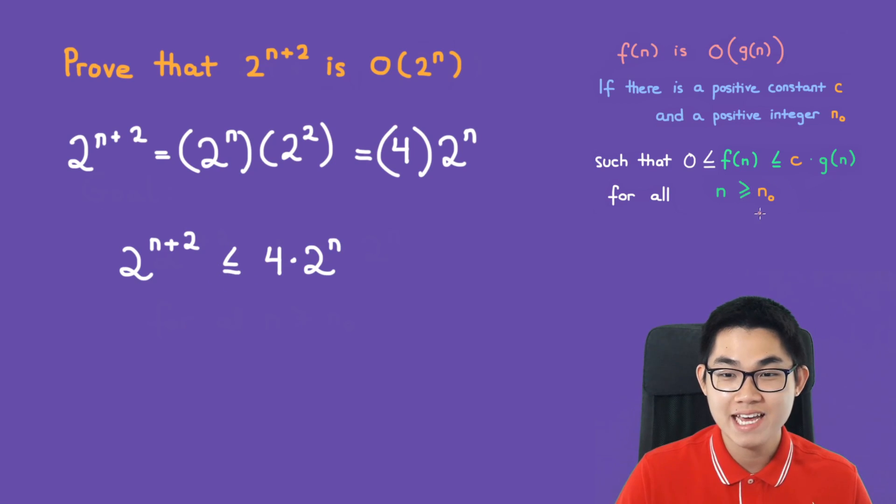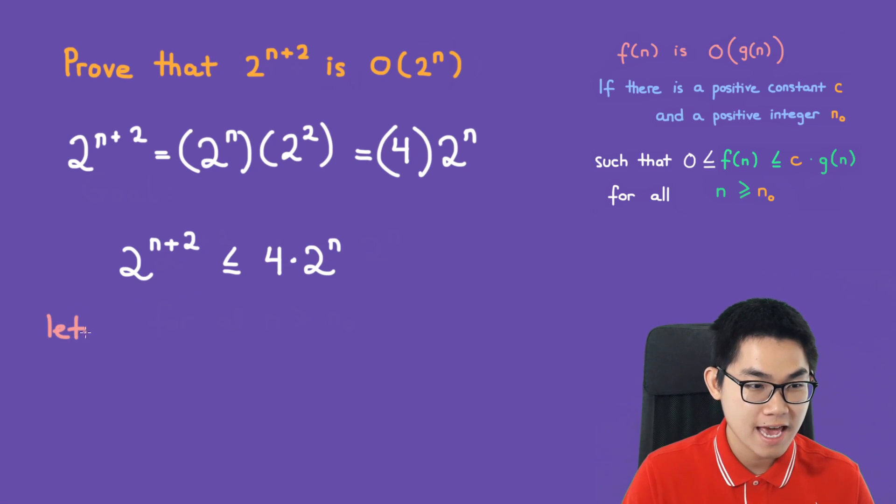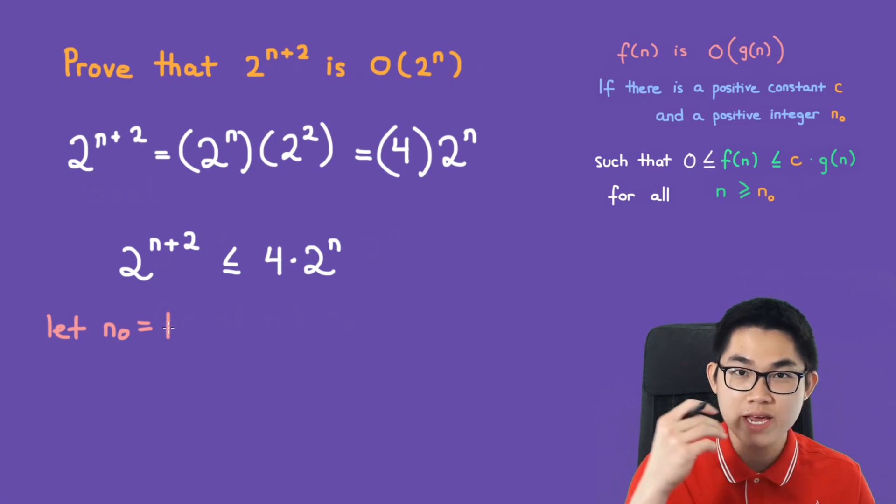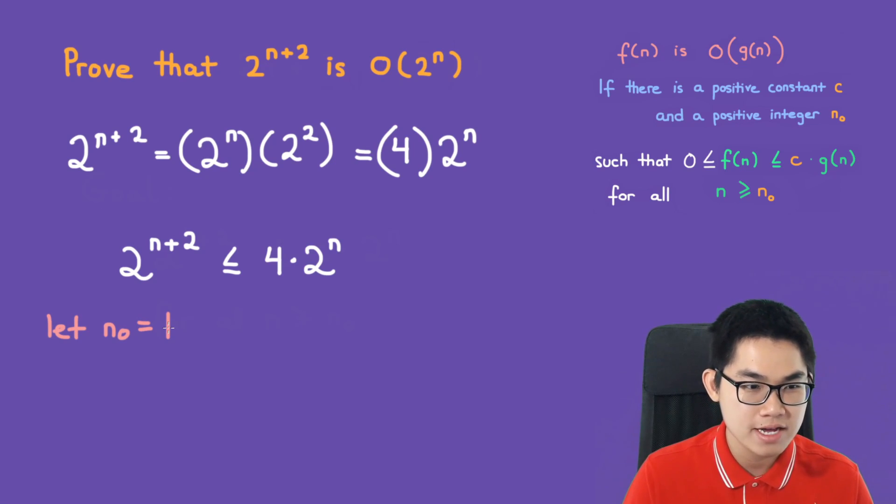We also need to find an n₀. We can try letting n₀ equal 1, and if this doesn't work, we can increase it to 2, 3, etc. Plugging in n equals 1, we have 2^(1+2) which is 2^3, which is less than 4 times 2^1. So this is 8 less than or equal to 8.